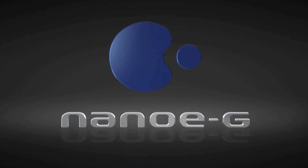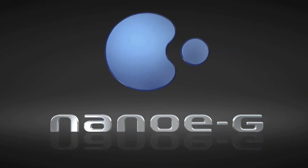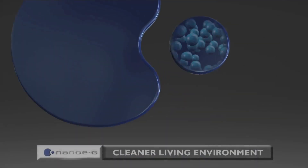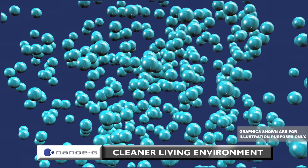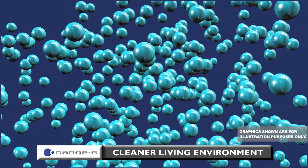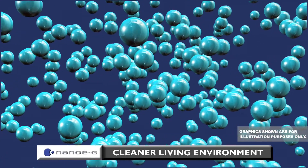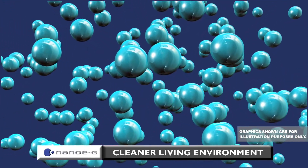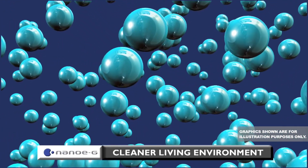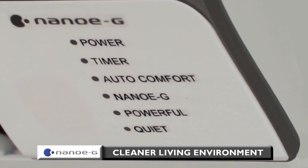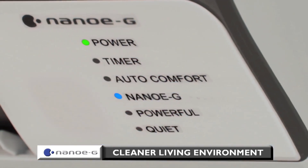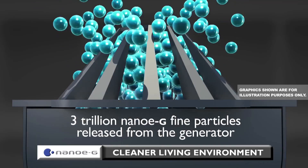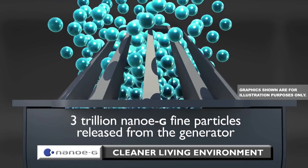Nano-EG is an advanced air purification system which utilizes nanotechnology fine particles to deactivate microorganisms. As soon as you switch it on, these particles are released from the Nano-EG generator.